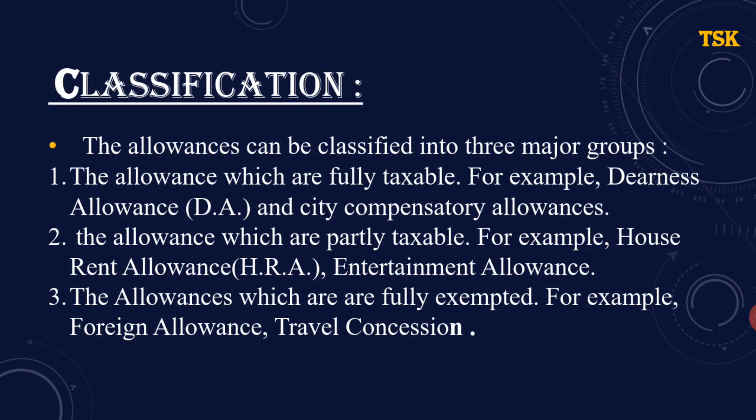Now let us move to the next slide — classification. The allowances can be classified into three major groups. First are fully taxable allowances. दूसरा है partly taxable allowance। और तीसरा — fully taxable मतलब उस पर पूरा-पूरा tax लगे — for example dearness allowance और city compensatory allowance।